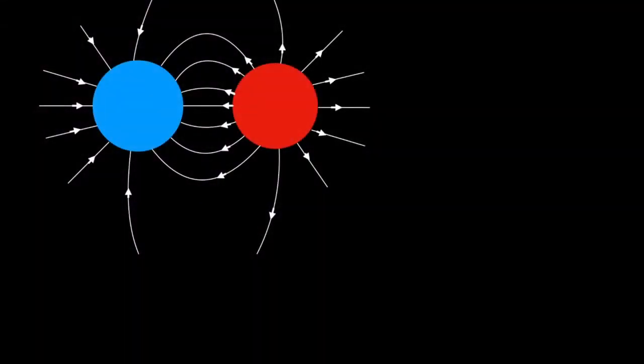To explain, the first thing to understand is all about electric fields. The two spheres drawn here have a positive and a negative charge. The lines between them show the direction of the electric field — that is, the direction of the force that would exist on a small positive charge between them. Where the lines are close together, the field is much stronger. The force on a negative charge, such as an electron, would be in the opposite direction.